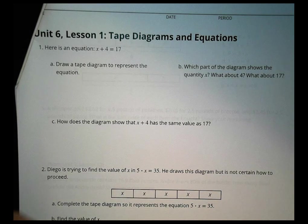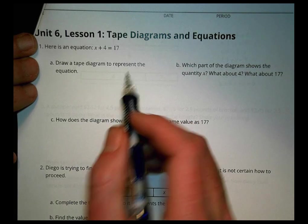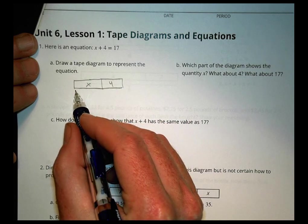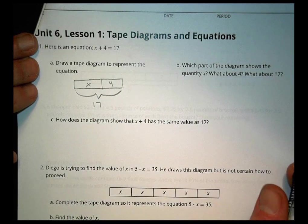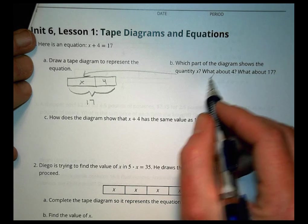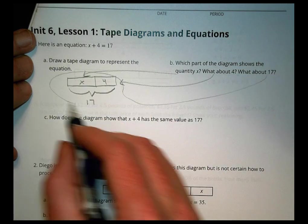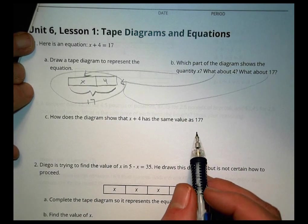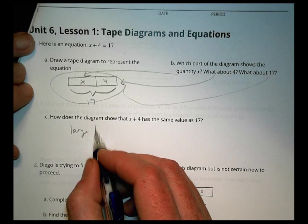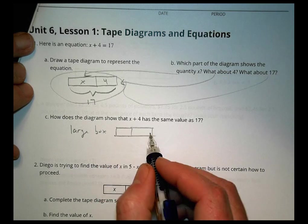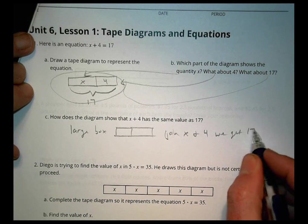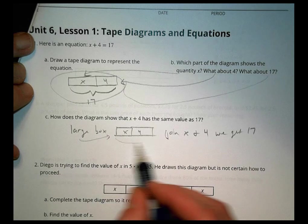Homework number one: the equation is x plus 4 equals 17. Draw a tape diagram — an x box, then a 4 box, and the whole thing combined equals 17. The x is the first box, the 4 is the second box, and the 17 represents the entire combined rectangle. The diagram shows that when you join x and 4 together, you get 17.